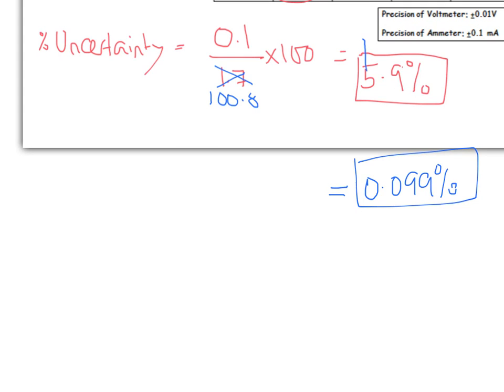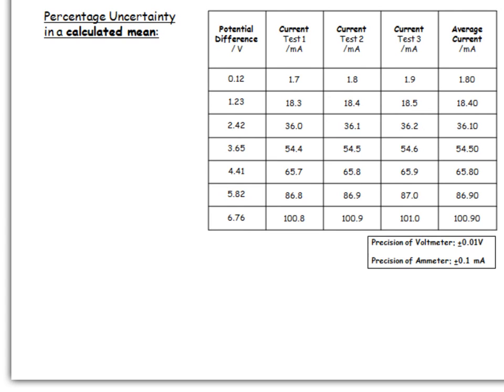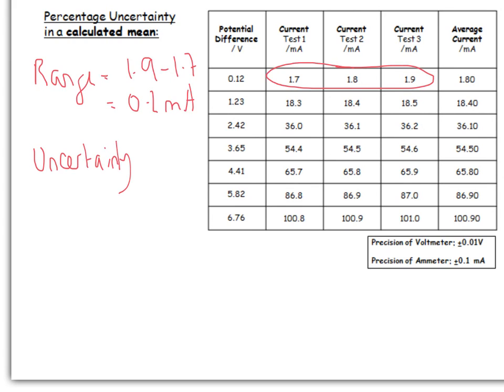Let's move on to an example about the percentage uncertainty in the mean. Let's have a look here, and just like before, I'm going to take a look at these top lines. So first of all, the range is going to be 1.9 minus 1.7, which gives you 0.2 milliamps.